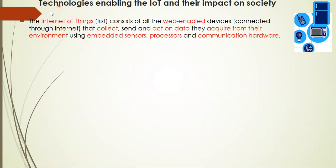Next, we're looking at the Internet of Things. Technology is enabling the Internet of Things and its impact on society. The Internet of Things means devices being connected to the internet. It consists of all the web-enabled devices that collect, send, and act on data they acquire from the environment using embedded sensors, processors, and communication hardware.